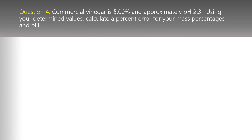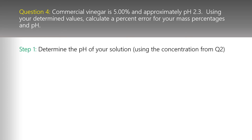Question four has a couple of parts. Commercial vinegar is 5% and has approximately a pH of 2.3. Using your determined values, calculate the percent error for your mass percentage and pH. We haven't calculated pH yet, so first we need to do that — we can't get a percent error until we have the value.